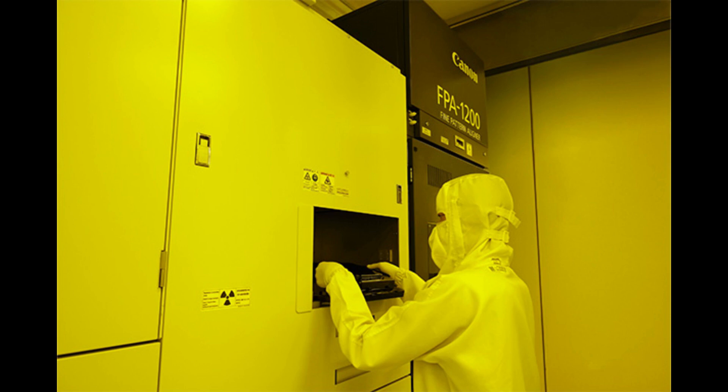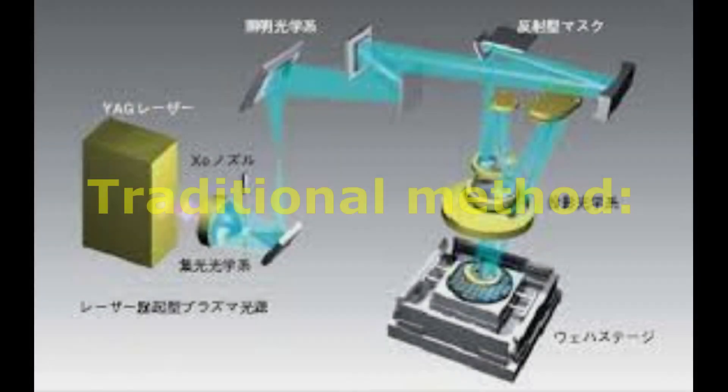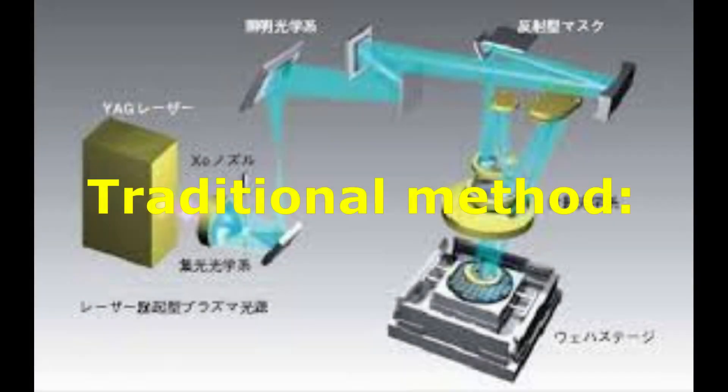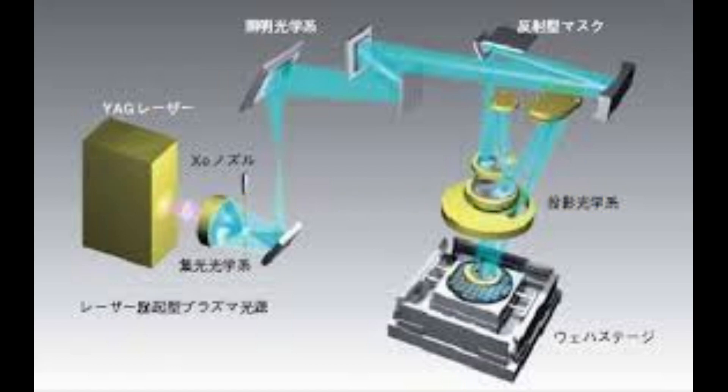The most important element in semiconductor manufacturing is the exposure equipment that transfers circuit patterns onto wafers. In the traditional method, light is irradiated onto the resist resin coated on the wafer, burning the circuit pattern. However, this involves an optical system, and miniaturization therefore relied on the wavelength of the light source.